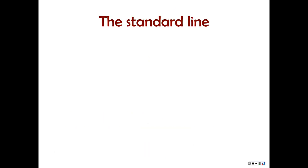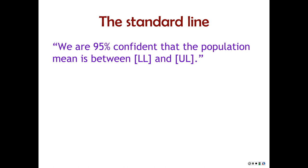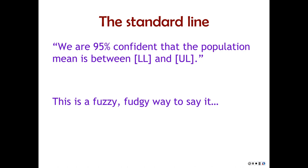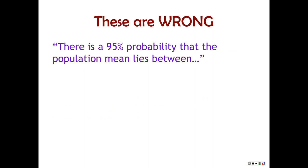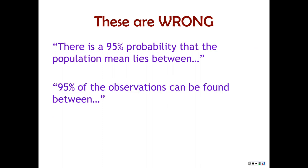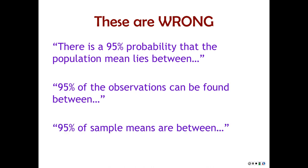When interpreting confidence intervals, we often say we are 95% confident that the population mean lies between these two numbers. It's a fuzzy, fudgy way to say it, but it is not wrong, and that's important. These statements, however, are wrong: 'there is a 95% probability that the population mean lies between X and Y,' or '95% of the observations can be found between X and Y,' or '95% of sample means fall here.' These are terrible — deeply, fundamentally, horribly wrong.